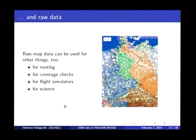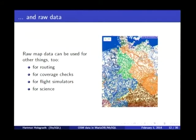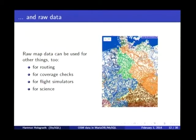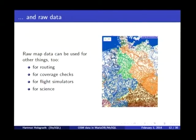That's all possible if you have the raw map data and not just graphic tiles that you get from Google or Bing. Other things you can do once you have the data: one big topic is routing — not only for cars, but also for bicycles and pedestrians. You can do coverage checks. For example, in Germany there's a rule that if you live in a residential area, the next postbox should not be farther away than one kilometer. Having the data on where postboxes are — all of them collected for OpenStreetMap — you can check if your postal service really provides the required number of postboxes. OpenStreetMap has also been used in at least one flight simulator to provide more realistic landscape rendering, and it's used in science.